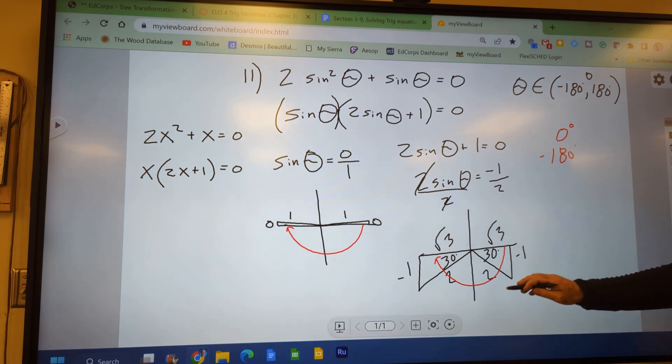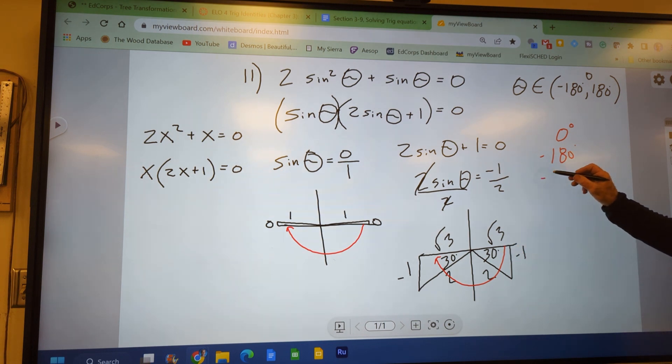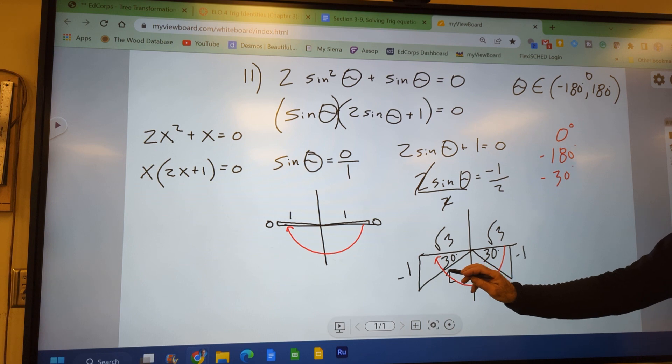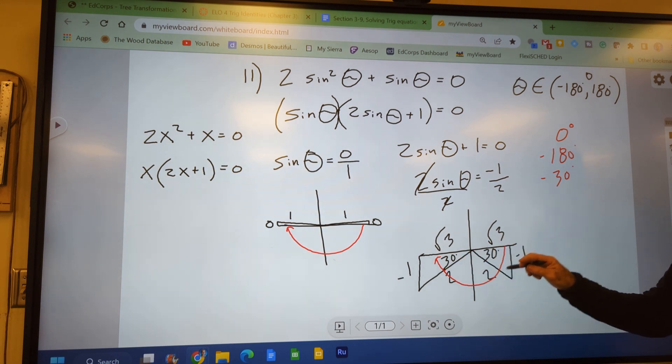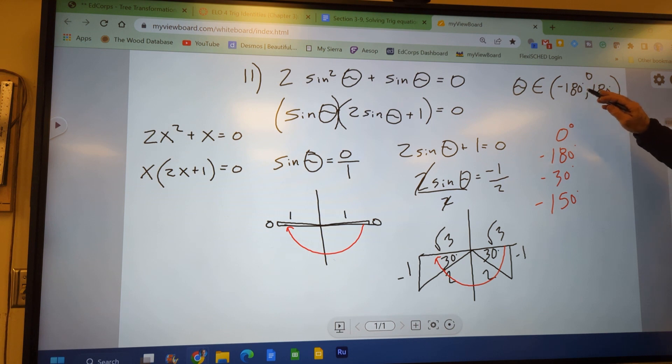And then here from 0 to negative 180 is going to be going clockwise, negative 30 degrees. And then this one right here is that terminal side. 30 is a reference but the angle is negative 150. So those are all my solutions that work between 0 and negative 180.